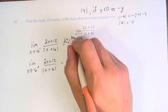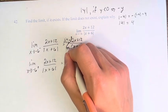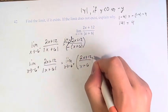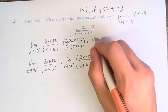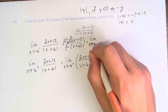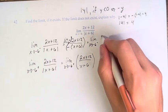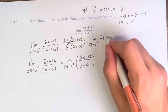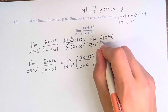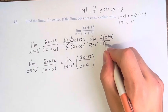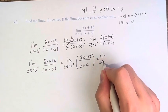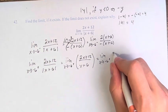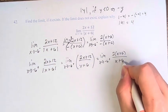And so if we take these two fractions, we're basically doing the same thing to them, right? This is the limit as x approaches negative 6 from the left of 2 times, pulling out a 2 up here, x plus 6, over negative x plus 6. And here, this is the limit as x approaches negative 6 from the right of 2 times x plus 6 over positive x plus 6.